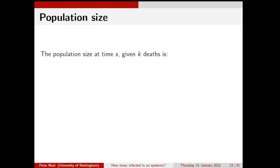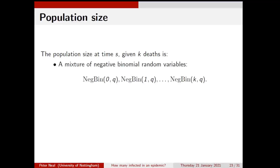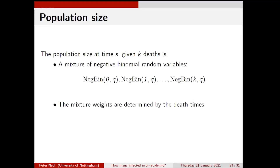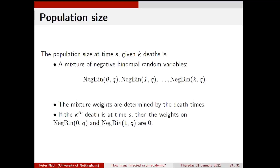To summarize what we've seen: the population at time S given K deaths can be expressed as a mixture of K+1 negative binomials — from NegBin(0, Q) (which is just zero) up to NegBin(K, Q). The mixture weights are determined by the death times. If you don't observe the death times, you can still get this mixture of negative binomials. And if the Kth death is at time S, the weights are on the two smallest negative binomials — zero and one — giving a lower bound for population size of NegBin(2, Q).